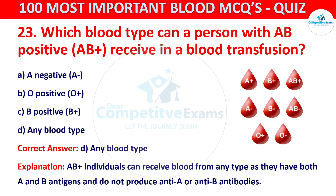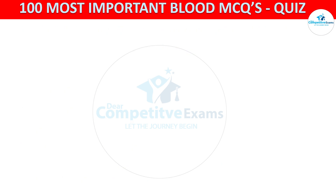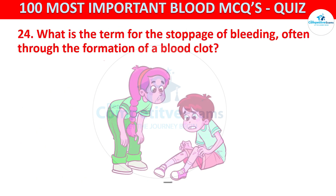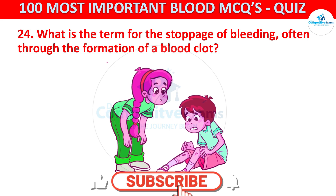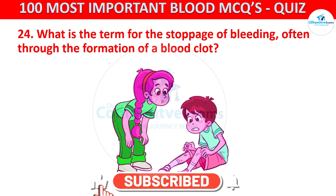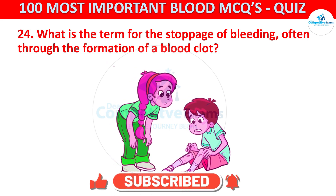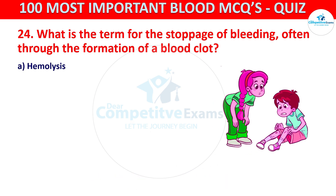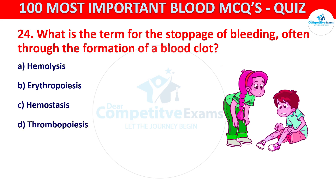AB positive individuals can receive blood from any type as they have both A and B antigens and do not produce anti-A or anti-B antibodies. Question 24: What is the term for stoppage of bleeding, often through the formation of a blood clot? Your options are Hemolysis, Erythropoiesis, Hemostasis, or Thrombocytosis.